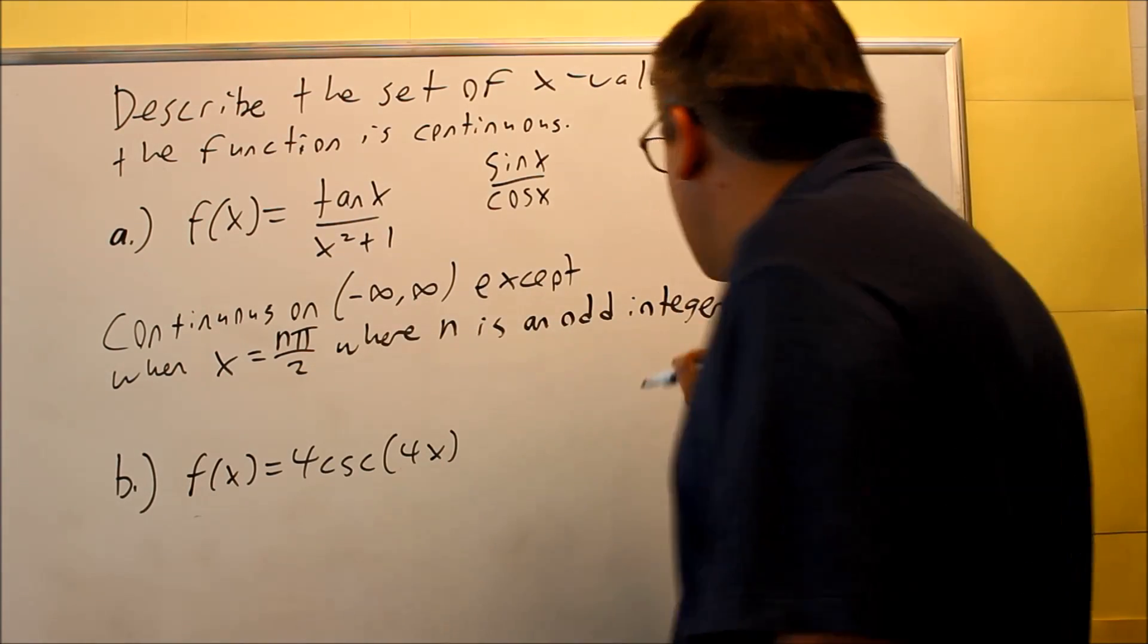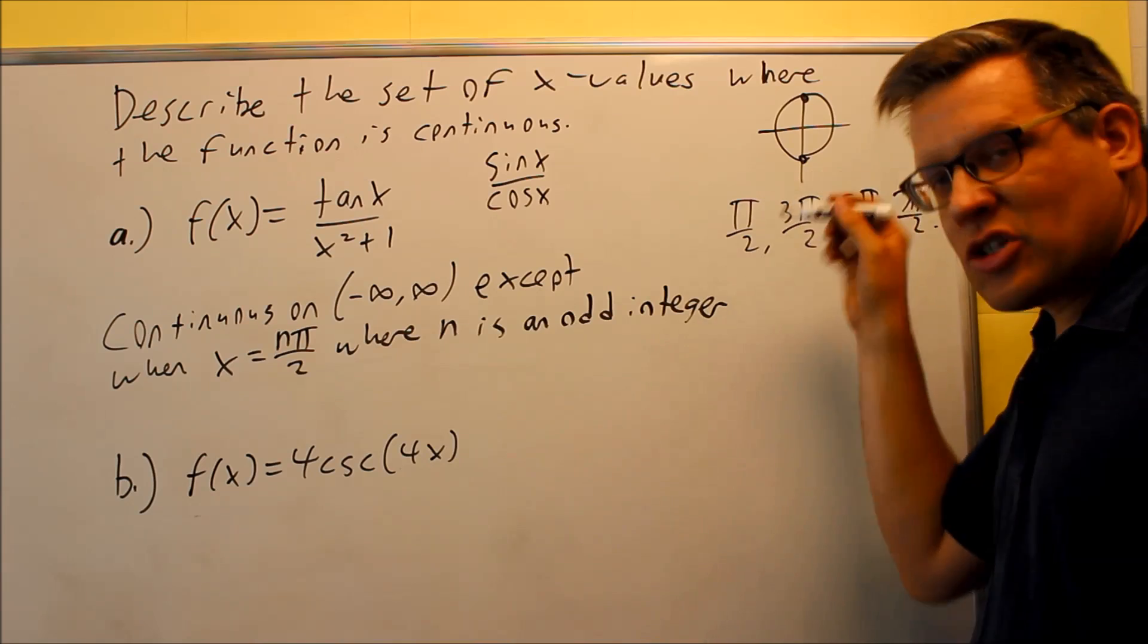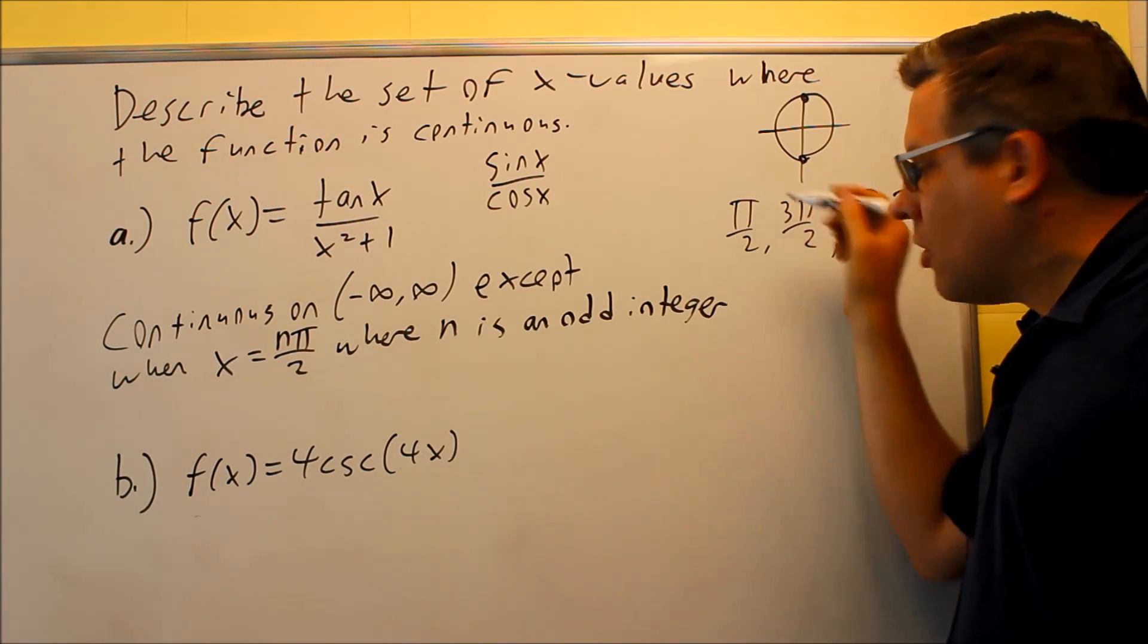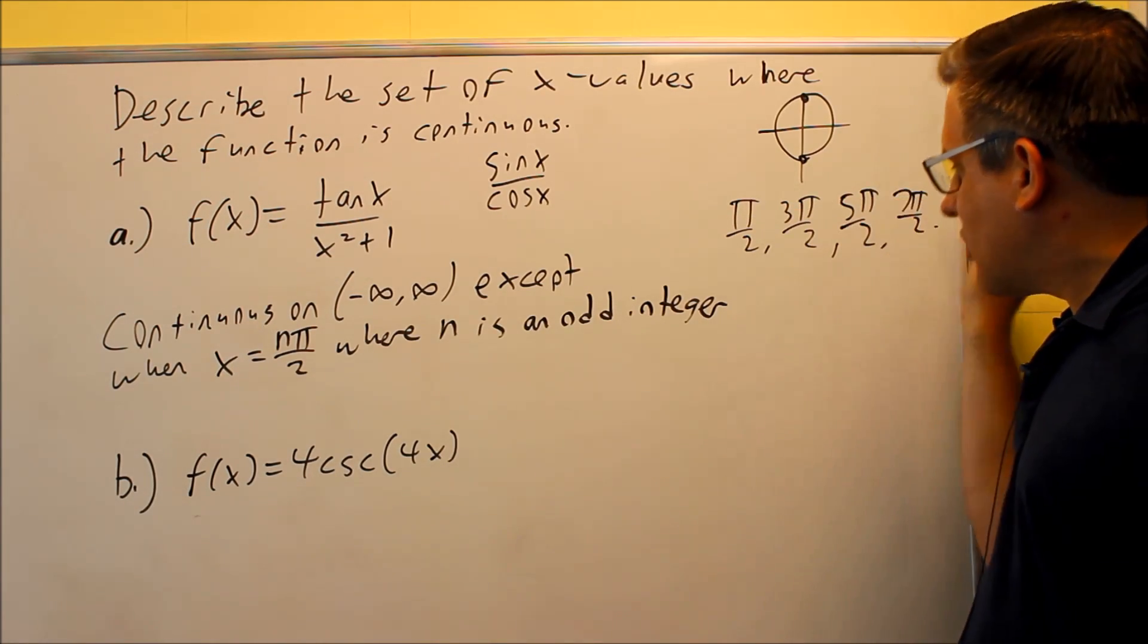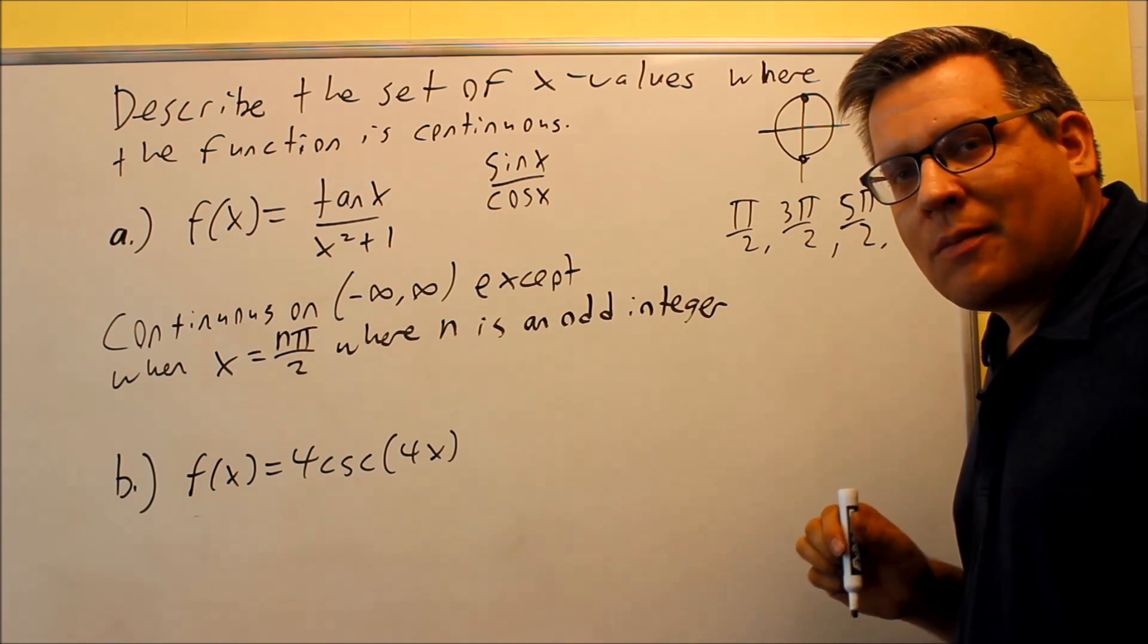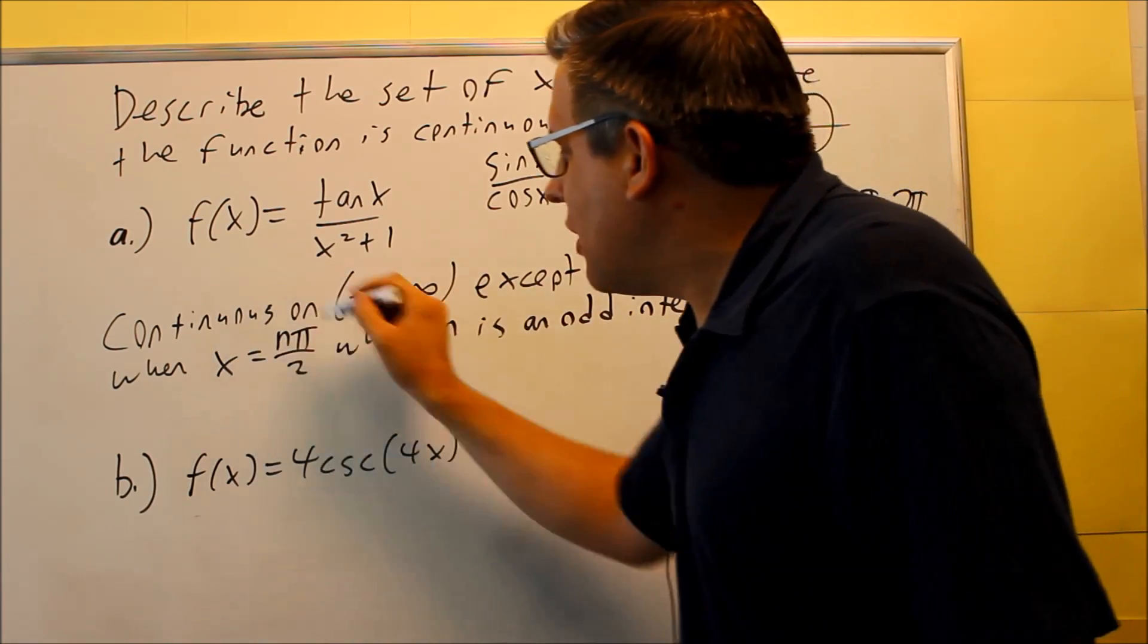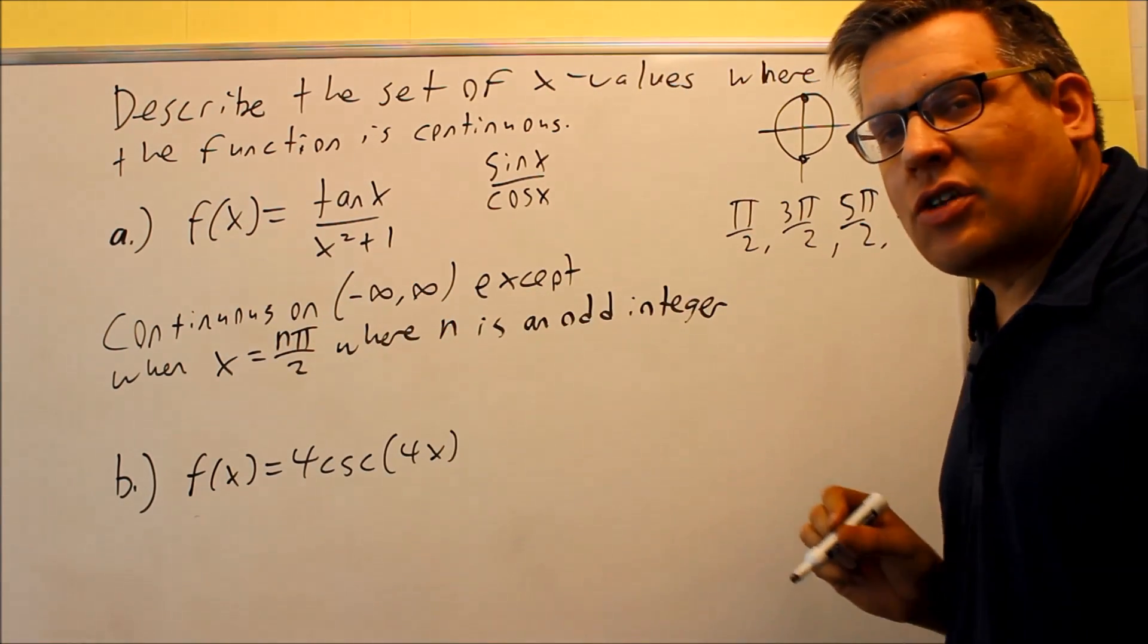where n is an odd integer. And you want to make sure you specify an integer. You don't want to say a number, any kind of number, because you don't want to have a decimal or something. It's a whole number over two. So one, three, five, seven, these are odds, an odd integer. And that's the statement that you would write for this particular problem. It's continuous for all numbers, except at n pi over two, where n is an odd integer.